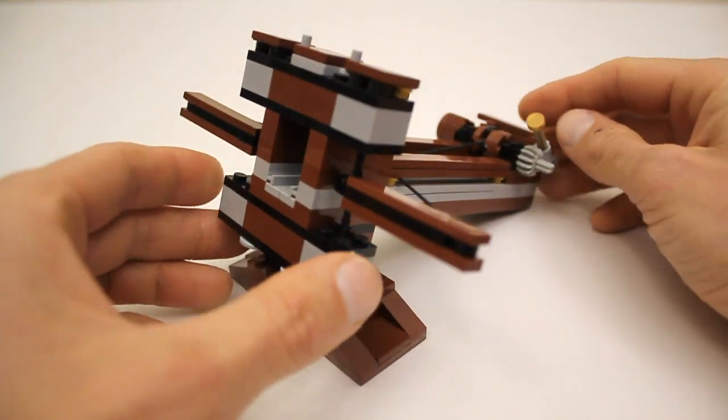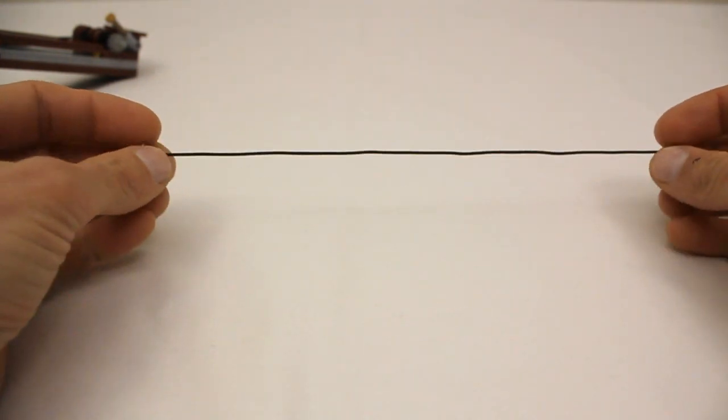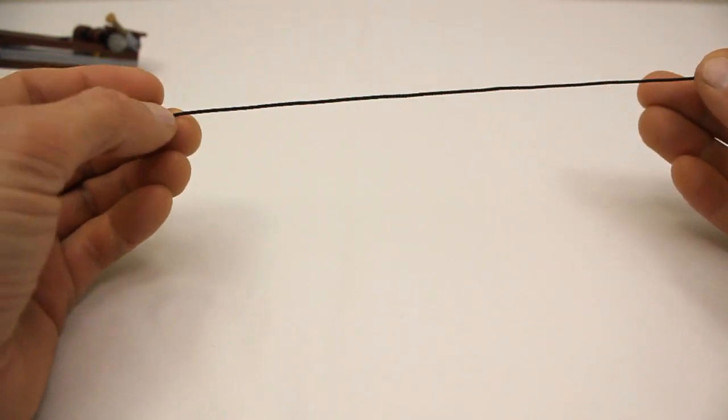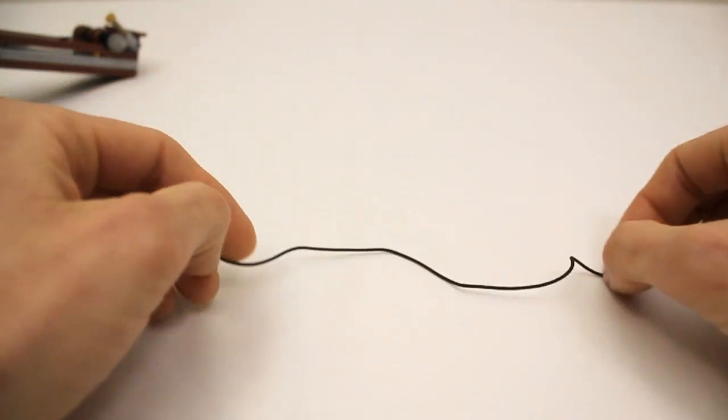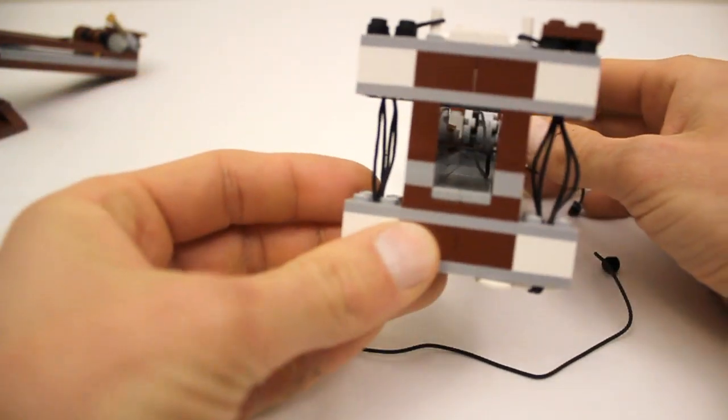So, for the torsion springs, I'm just using these Lego strings that have these plastic studs on the end. The biggest advantage to using these is that no knots need to be tied at all to build the model. I have a partially built model here to show you how they're set up.